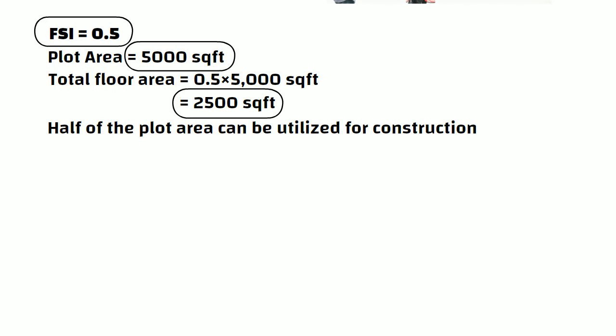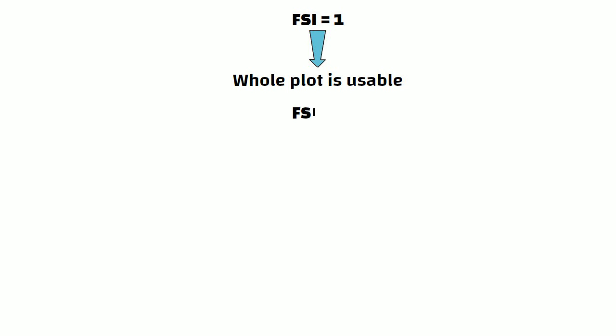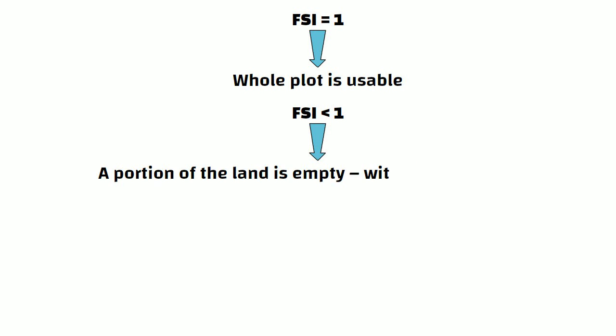It indicates that you can construct 2 floors of 1250 square feet, or 3 floors of 833 square feet. It is important to note that if the FSI is 1, it indicates that the whole plot is usable. If the value is lower than 1, then it indicates that a portion of the land is empty without construction. However, if the FSI value is above 1, then it means that there are multiple stories on the same plot.